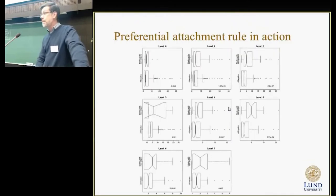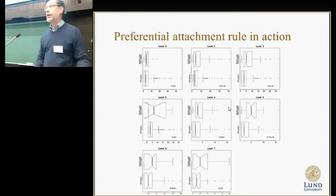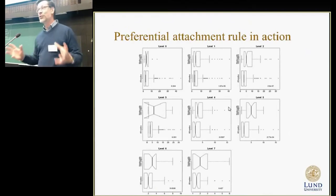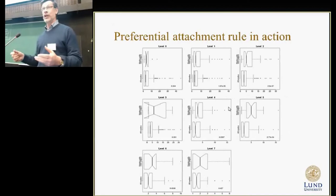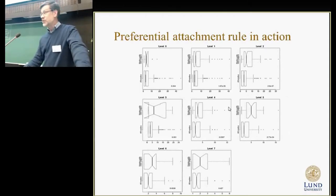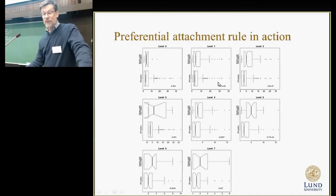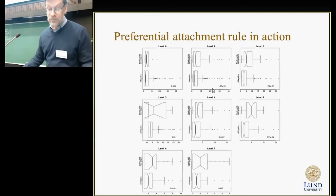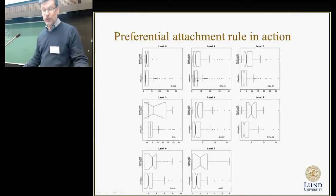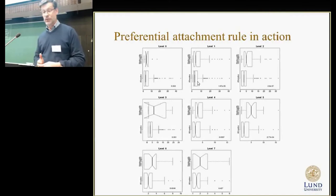Another feature of these networks is the so-called preferential attachment rule, which in practice means the rich get richer. Those nodes with plenty of connections are likely to get new connections when new players — in this case new proteins — are added to the system. We are looking at the degrees, the number of connections, on the different evolutionary levels. We see that on many levels we have very statistically significant enrichment into those nodes which have new connections compared to all nodes in the system. This is really biological evidence for the preferential attachment rule.